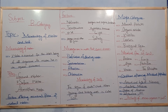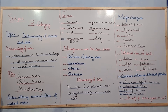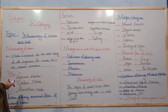Surface water includes lakes, streams, rivers, and oceans. Surface water is contaminated with microbes from atmospheric water, soil, and any waste dumped into it.